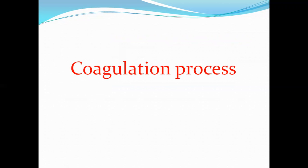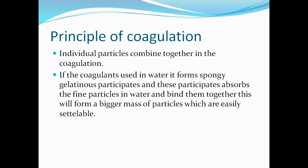Now see what the coagulation process is. The principle of coagulation is that individual particles combine together — that is, two or more particles combine to form one particle. If coagulants are used in water, they form spongy gelatinous precipitates, and these precipitates absorb the fine particles in water and bind them together, forming a bigger mass of particles which are easily settleable.